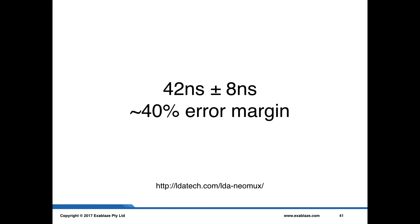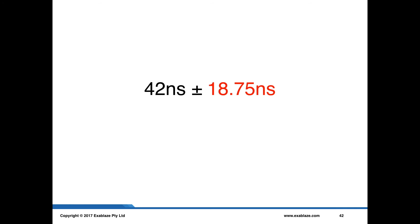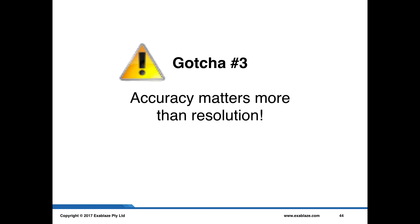Putting that in context, if we took our 42 nanosecond device plus or minus 8 nanoseconds and replaced it with the 37 nanosecond spread that we're seeing, what we end up with is a 42 nanosecond device plus or minus 18.75. So, that 40% error margin blows out to be a 90% error margin. And so, what I want to conclude here is that the accuracy matters absolutely more than the resolution.